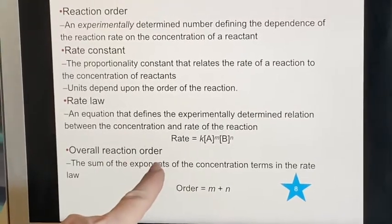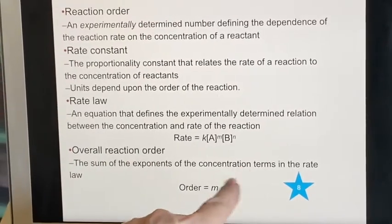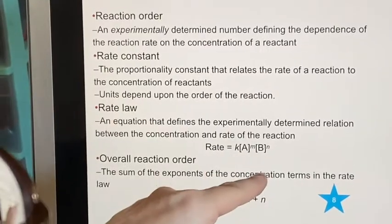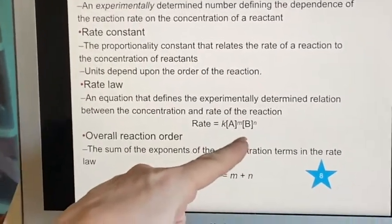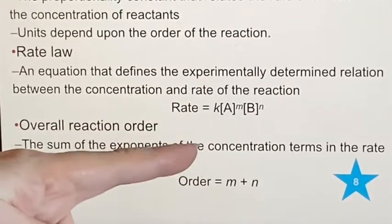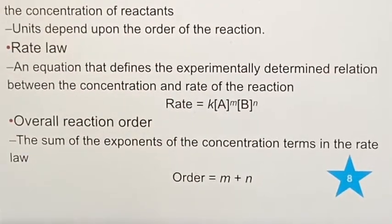Then overall reaction order—the sum of those exponents, m and n. We must have had A and B combining here, right? Because we're talking about the concentration, the rate of the reaction. It sounds like A and B should be involved. They must be what's combining.